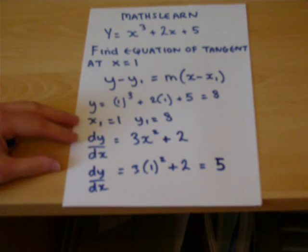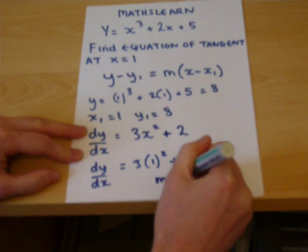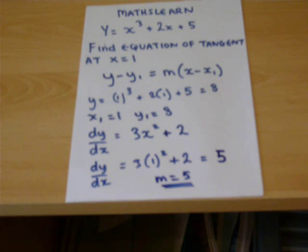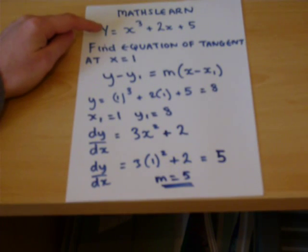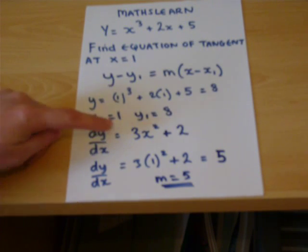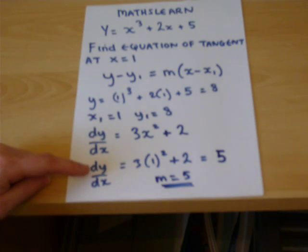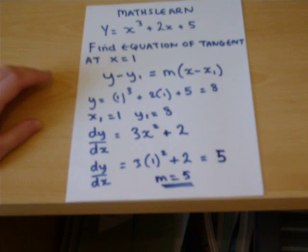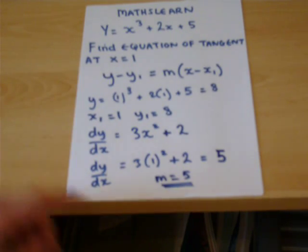In other words, for this particular line, m equals 5. Just to really emphasize notation here: dy by dx refers to the curve and provides the gradient at all points. At x equals 1, we can find the gradient, which is 5, and a tangent by definition shares the same gradient, so the line also has a gradient of 5.